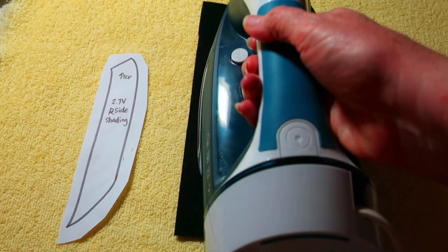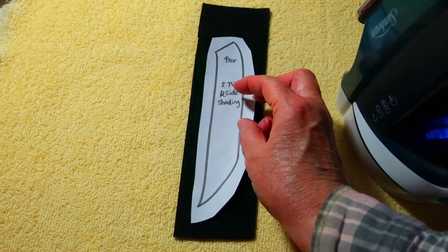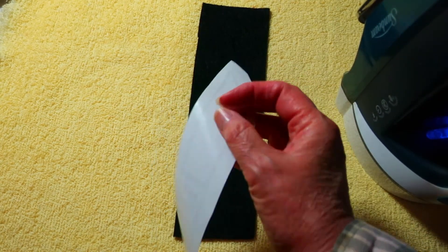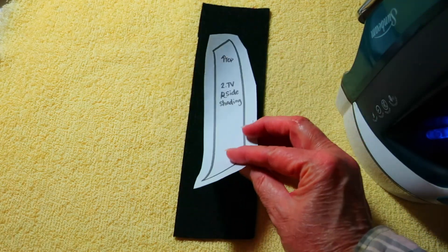Prepare your felt by ironing the felt. While it is still slightly warm, lay the image on the freezer paper down with the shiny side of the paper touching the felt.